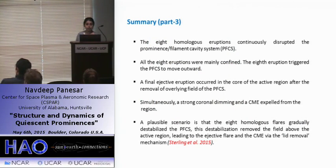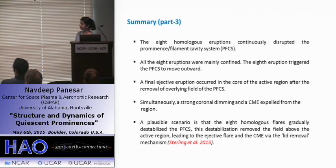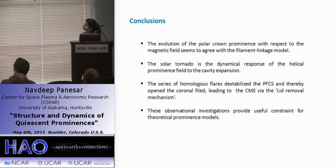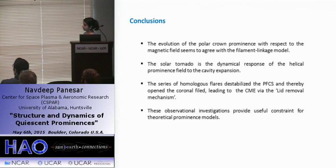In summary: all eight eruptions continuously disrupted the prominence-filament-cavity system. All eight eruptions were mainly confined. A final ejective eruption occurred in the core of the active region after the complete removal of overlying field lines, leading to the CME via the lid removal mechanism. Overall conclusions: the evolution of the polychron prominence with respect to the magnetic field agrees with the flux linkage model; the solar tornado is the dynamical response of the helical prominence field to the cavity expansion; the series of eight homologous flares destabilized the prominence-filament-cavity system and opened the coronal field leading to the CME. These observational investigations provide useful constraints for theoretical prominence models.